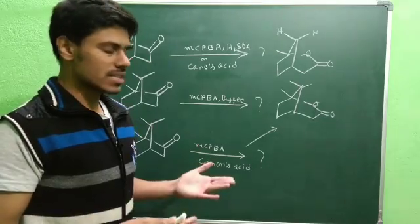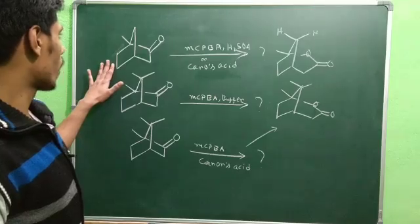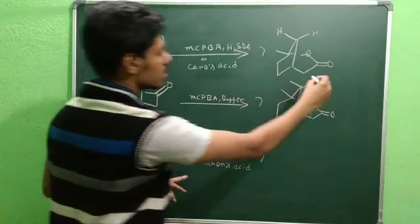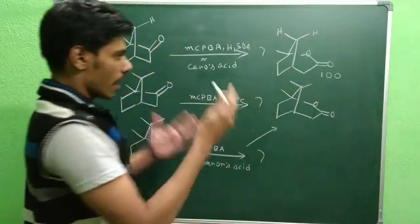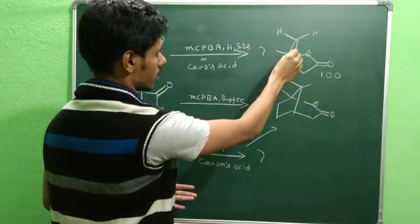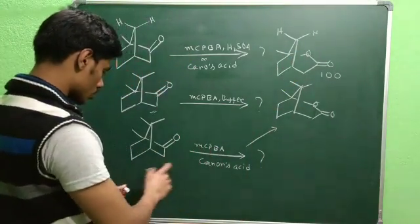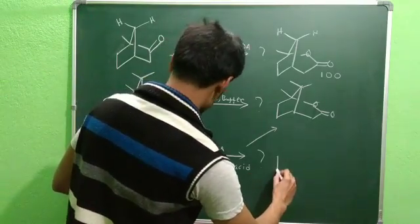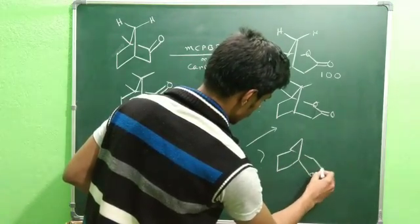In the case where you have two hydrogens, it is true that you will get 100% of the tertiary migration product - the bridgehead or tertiary position will migrate in 100% of cases. But it is not true for the other two examples. In the last case you actually get the completely reverse outcome, and you will get the methylene migration product as your major product.